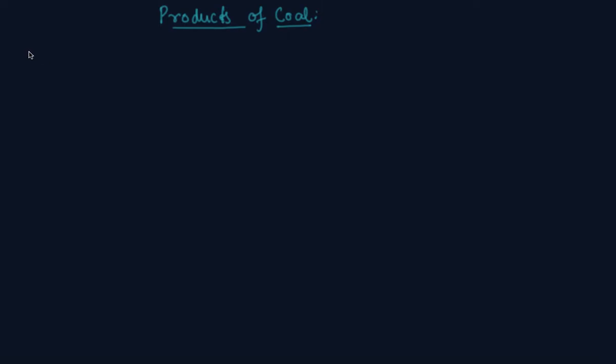So first product of coal is coke. This is a product of coal, students, which is sometimes a coke. It is a tough and porous, tough, porous and black substance.